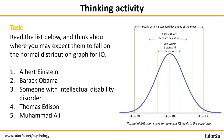Here's a quick thinking activity for you — you can do it alone or work with a partner if someone's available. Have a read of the list on screen and think about where you would expect these people to fall on our normal distribution graph for IQ. If you're not familiar with some of the people on the list, this would be a good time to look them up. Pause this video for five minutes and write your answers on your paper.